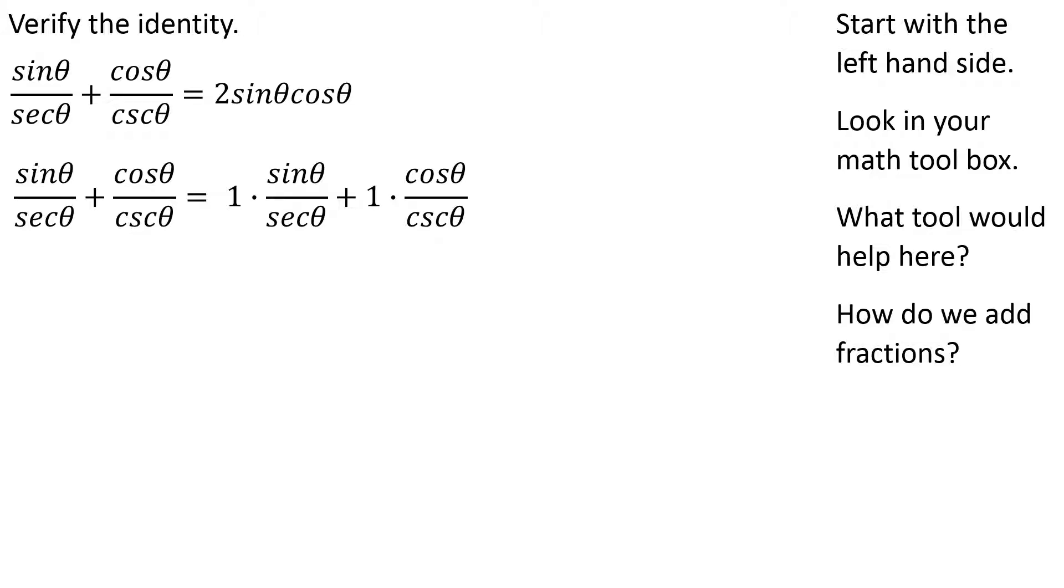Of course, multiplying by the number one does not change the value, so if I multiply each fraction by one I've made no change. Of course I can disguise the number one. For the first fraction I'll disguise it as cscθ/cscθ, on the other fraction I'll disguise the number one as secθ/secθ. I get a common denominator of cscθ secθ.